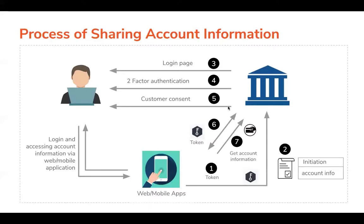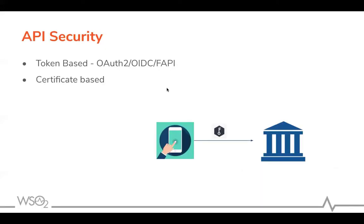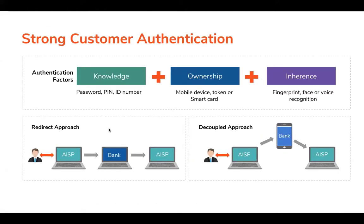Let's look at the security capabilities required to implement this flow. The first is API security — whenever we want to access the API, we need a token. The UK and Australia CDR specifications mainly use OAuth2-based access tokens, considering OAuth2, OIDC, and FAPI specifications. On the European side, they mainly use certificate-based access tokens, where third parties invoke the APIs with an eIDAS certificate.